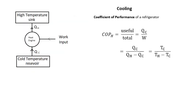For cooling — we're taking heat energy from somewhere cold and putting it somewhere hot. Can you see the difference in the equation? The difference is that the useful is the heat energy we are taking away from the fridge, so the useful is QC. In the heating equation it was QH; here it's QC. So the equation when we boil it down to temperature in Kelvin is slightly different — don't get them muddled up.